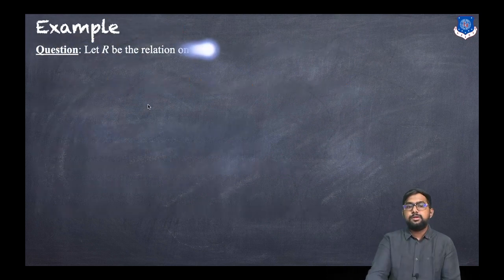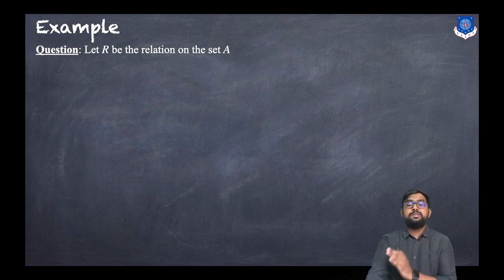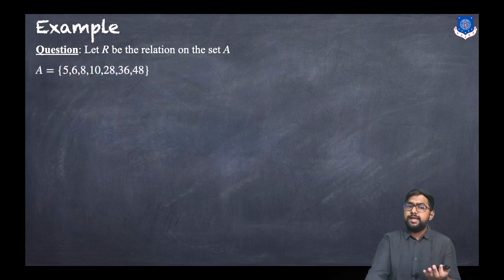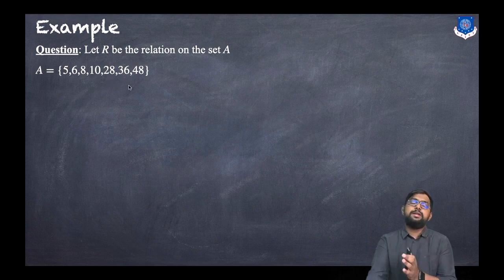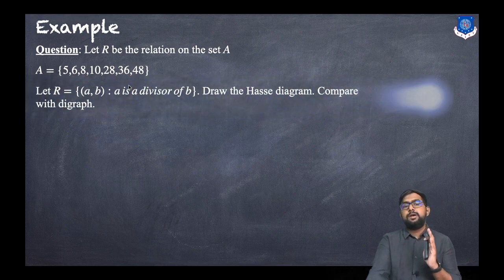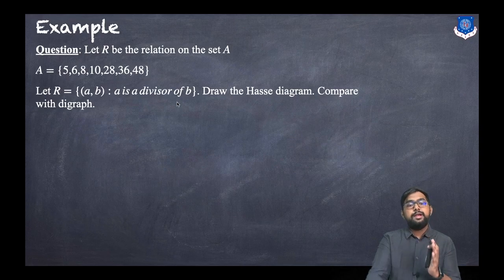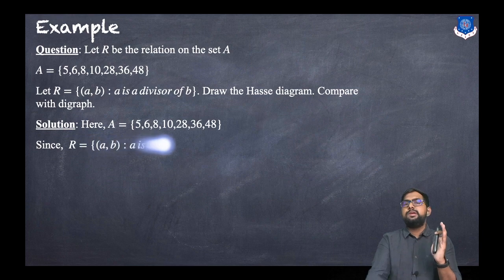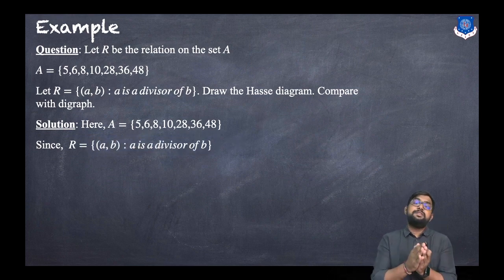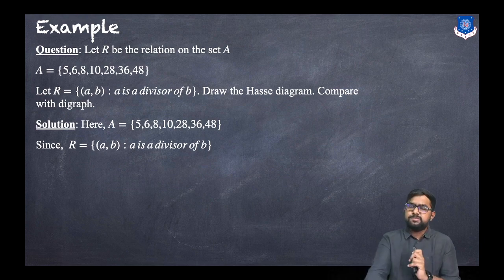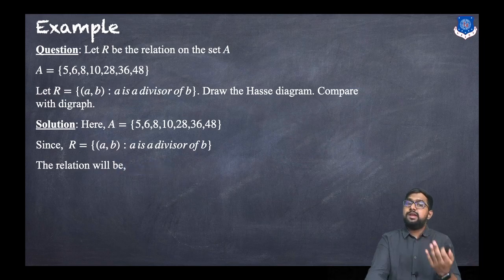Now let us discuss an example. Let capital R be the relation on set A = {5, 6, 8, 10, 28, 36, 40}, where R is the set of all (A, B) such that A is a divisor of B. Draw the Hasse diagram and compare it with the digraph. The relation here is the divides relation, meaning A divides B.